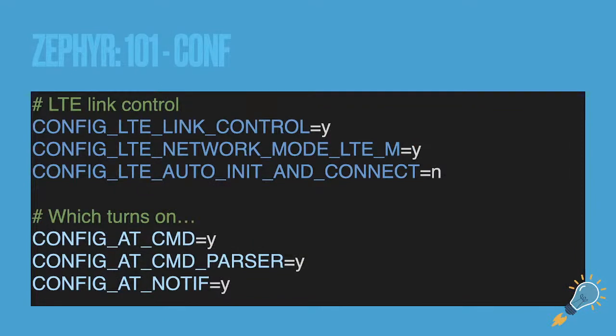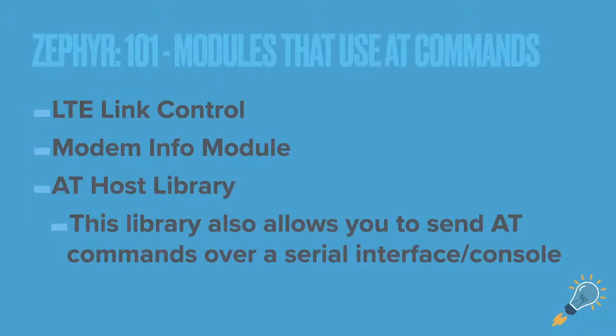At the top there, you can see if you're using nRF9160, that should look pretty familiar. This is just enabling your LTE link control. So enabling features for LTE, auto-init and connect. But in the backend, it turns on AT command, AT command parser and AT notifications. And these are the underlying libraries that allows you to communicate back and forth between the modem firmware in the nRF9160. Here are some other modules that basically use that underlying library, like LTE link control, modem info.